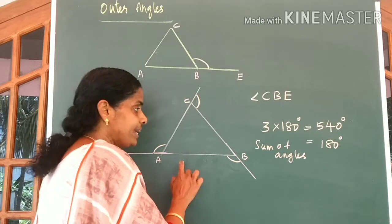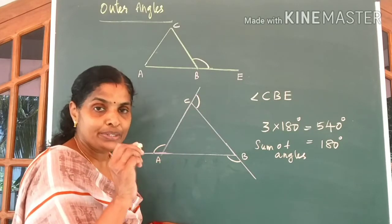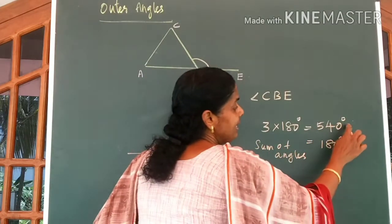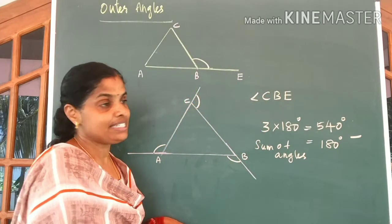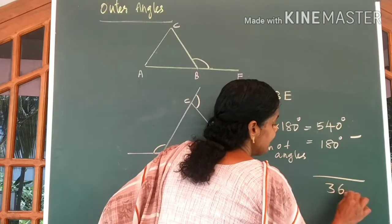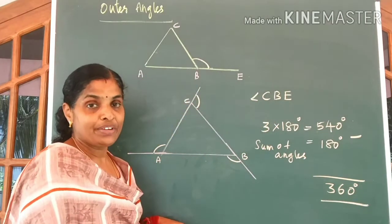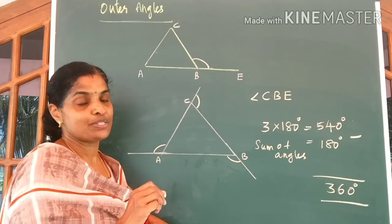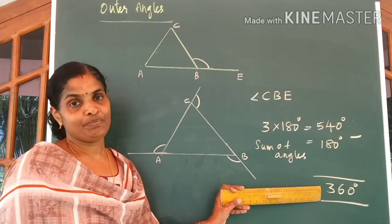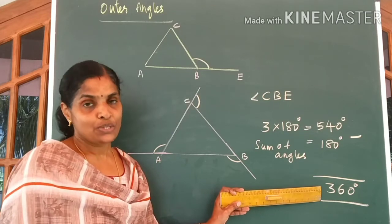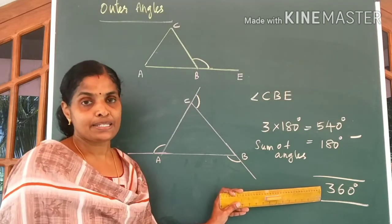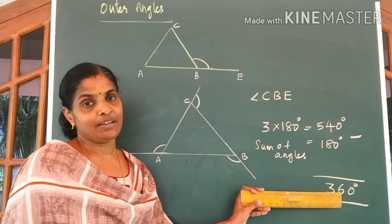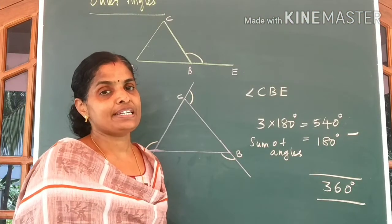So, we can find out the sum of outer angles of any triangle to be equal to 540 degrees minus 180 degrees, which is equal to 360 degrees. The sum of outer angles of a triangle is 360 degrees. More questions we will discuss in our next class, children.